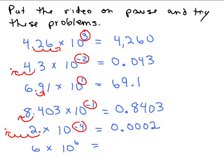And 6 times 10 to the 6th: the decimal point is after the 6 and we move it to the right. When you have a whole number, just tack on that many zeros — so we add 6 zeros and get 6,000,000 — 6 million. That makes sense because 10 to the 6th is 1 million, so 6 times a million is 6 million.